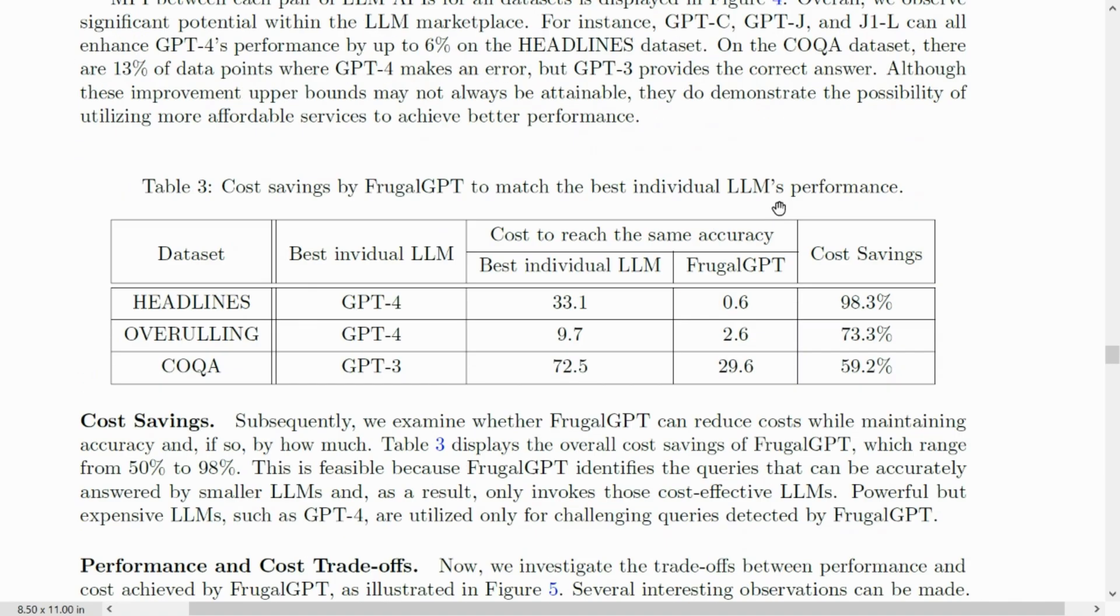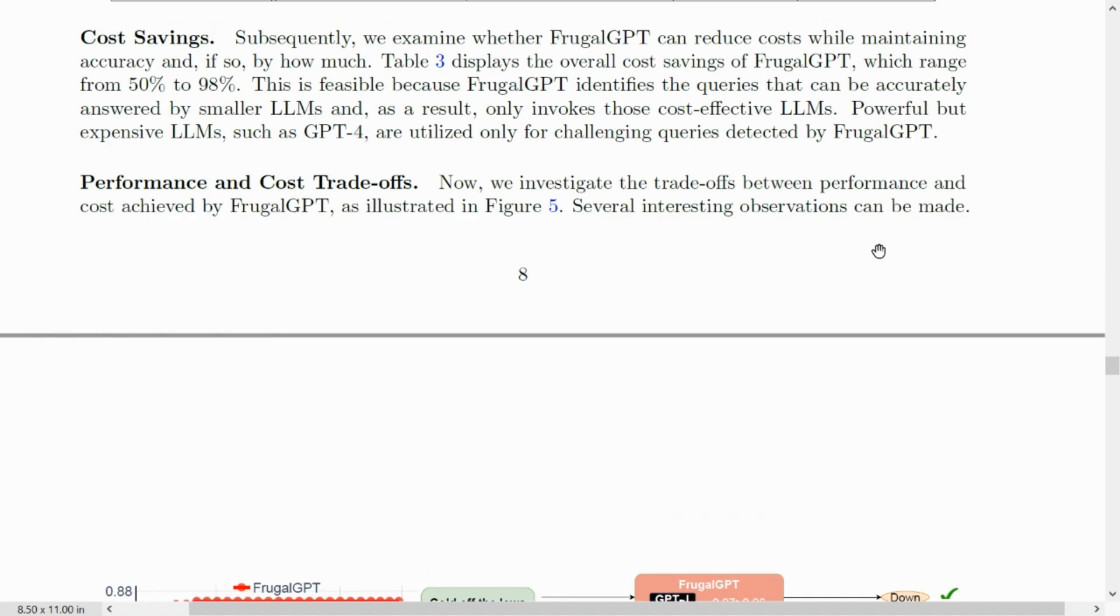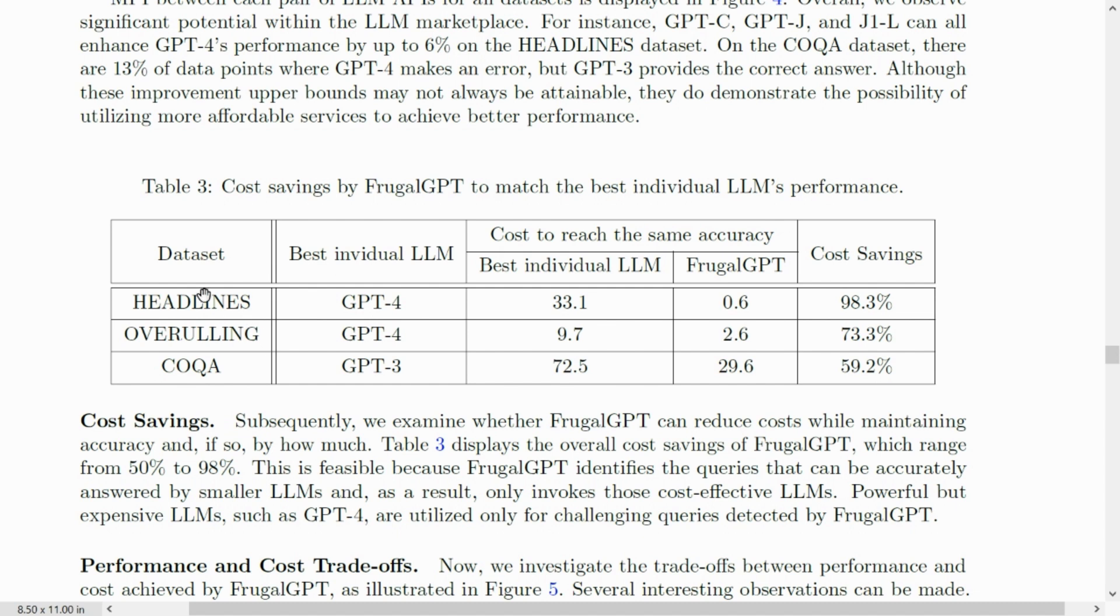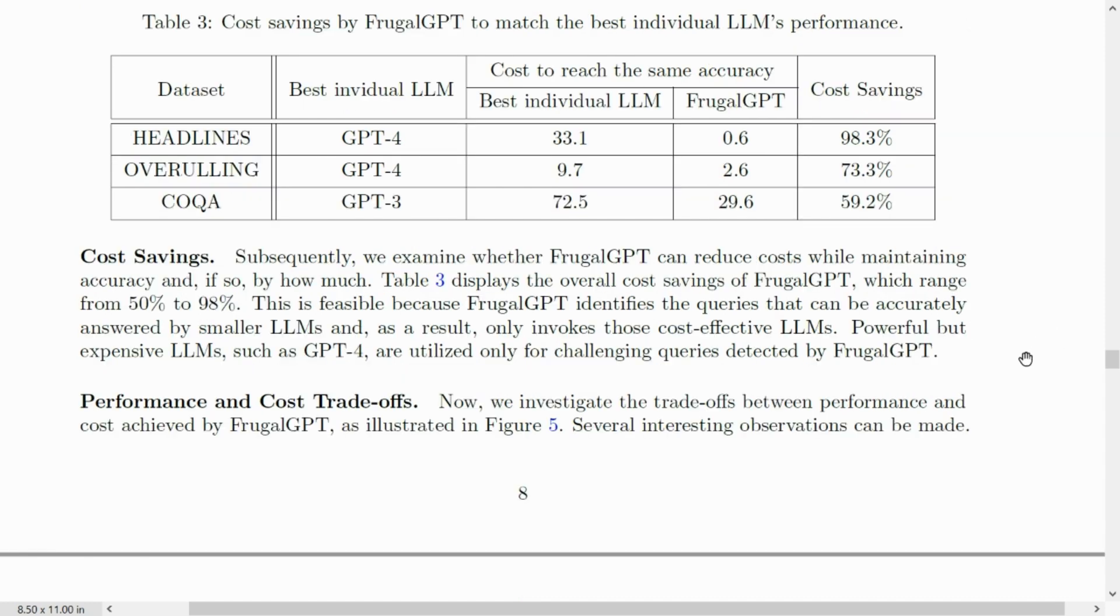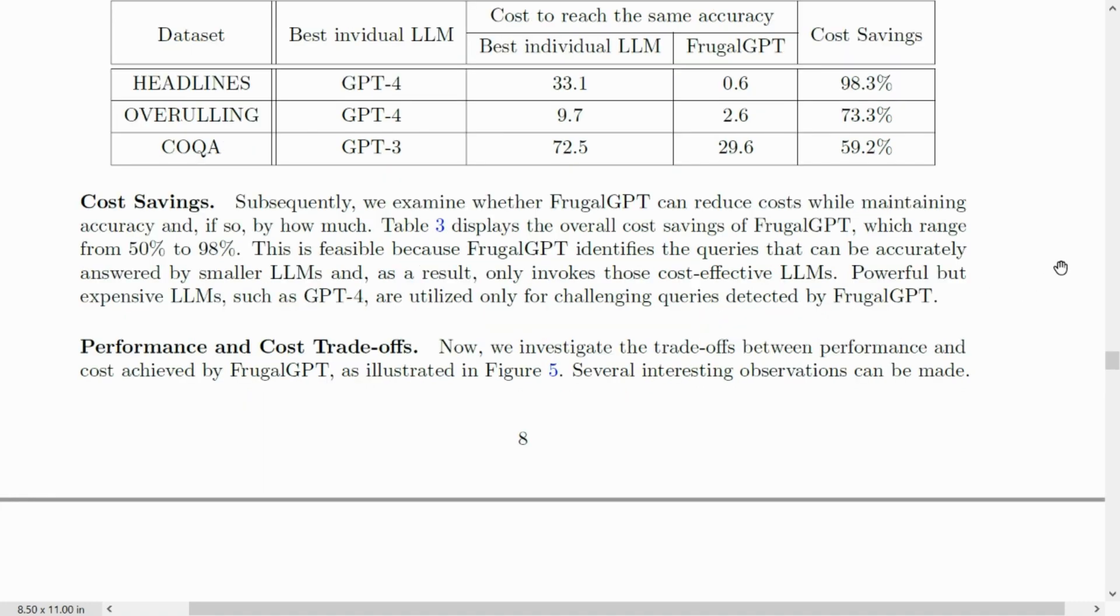We can go through this paper. It is amazing because it was able to bring down the cost to a very lower value. For example, here there are different datasets, three datasets. The best individual LLM for each of these datasets is given here. This is the cost for GPT-4 for the Headlines dataset. And FrugalGPT was able to reach the same accuracy with just $0.60. That's a cost saving of about 98.3%. For the Overruling dataset, the cost saving was 73.3% and COQA, the cost saving was 59.2%. I am loving this because this new technology is providing us a path to use GPT-4 and other APIs collectively to form your own API or to form your own GPT, FrugalGPT, that will reduce your cost to a large extent.